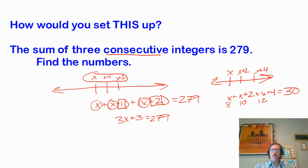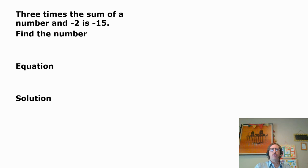One final note is, well, why don't you solve this one? Three times the sum of a number and two. Negative two is 15. Find the number. So is negative 15. We would write equals negative 15. Three times the sum of a number. Three times the sum of a number and negative two. This is how I would write it.